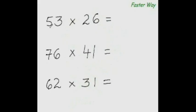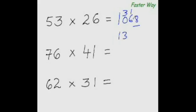Multiplying the first digit of this number with the first digit of this number: 5 times 2 is 10. Now multiply the first digit again with the second digit of this number: 5 times 6 is 30. But before you put down 30, add the product of this digit and this digit: 2 times 3 is 6, and 30 plus 6 is 36. For the last digit, multiply the last digits together: 3 times 6 is 18 — write 1 here, 8 here. So 10 plus 3 is 13, and the answer is 1378.